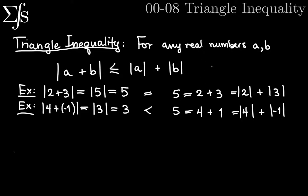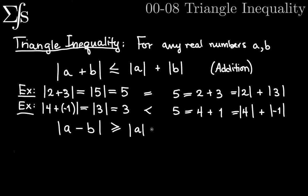This is only one of the forms of the triangle inequality — there are actually two forms. This is called the addition form. The other one is the subtraction form. Instead of A plus B, we have A minus B, and that turns out to be greater than or equal to the absolute value of A minus the absolute value of B. When we split it over a difference, we get it's greater than or equal to the difference of their individual absolute values.